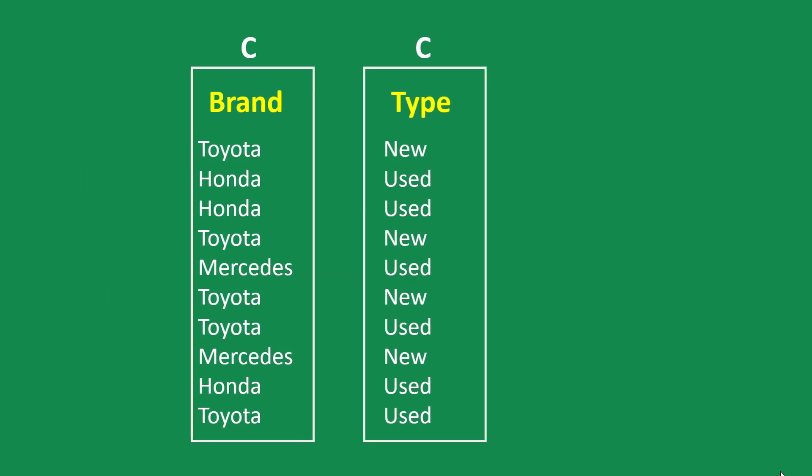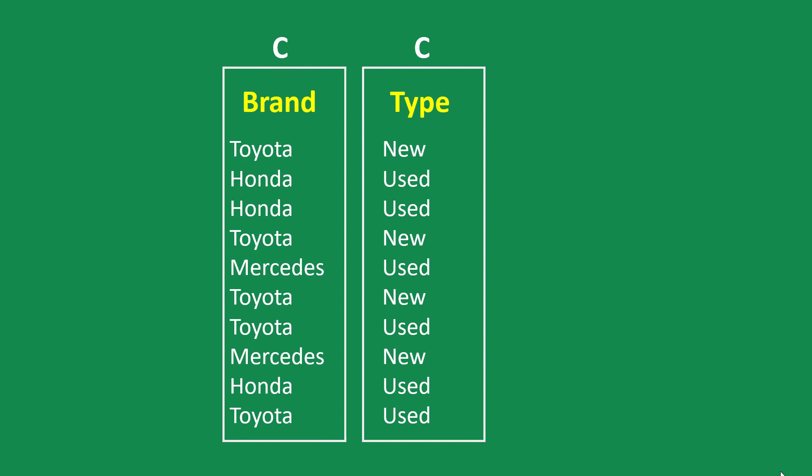But wait — what if all you have is two fields and both of them are categorical? Does that mean there's no way to summarize this data? Not at all. The element of counting also serves as a quantitative value you can use against a category. For example, you might find the total number of new Toyota cars or the total number of used Honda cars — you're using the type column as a count: how many new, how many used.